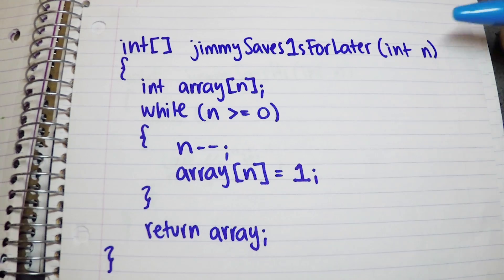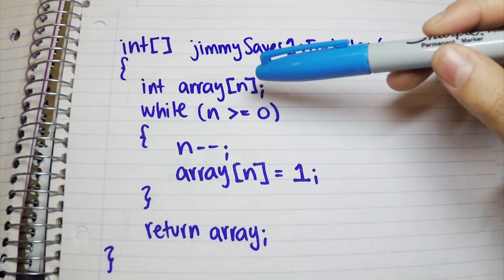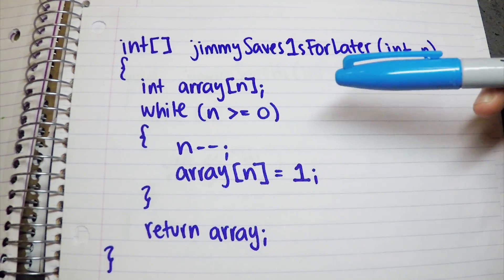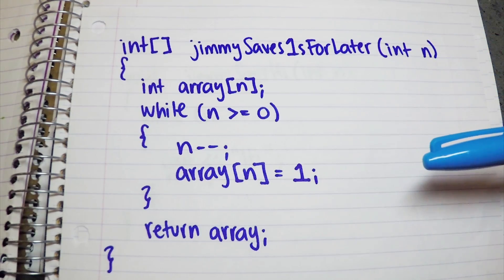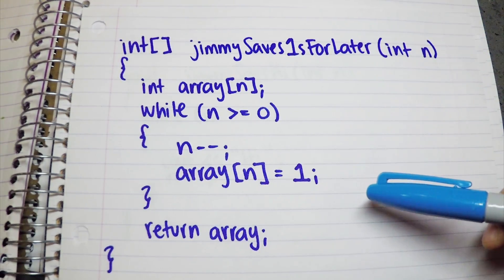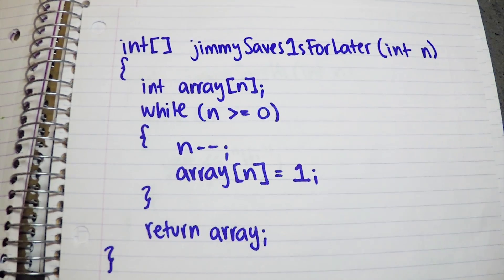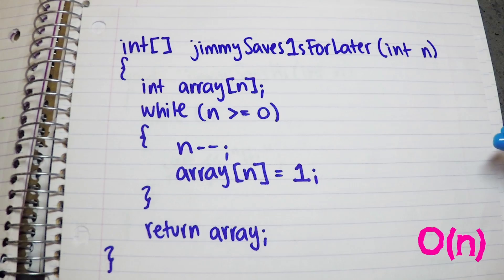In this function, we take a number, then we create an array the size of our input, and we loop n number of times. As we loop, we're going to save the number 1 in each of our elements. This will give us the space complexity of O(n), because our array will scale based on our input when we run it.